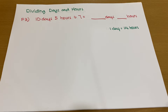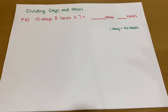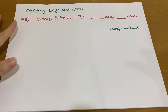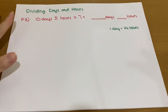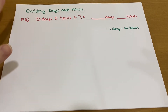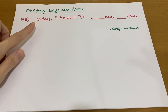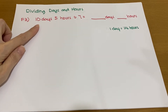Hi students, in today's video I'm going to teach you how to do division of time. Let's look at the first question, which involves dividing days and hours. We have 10 days 5 hours divided by 7.